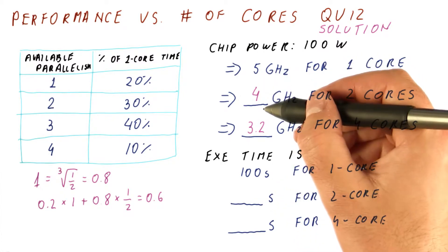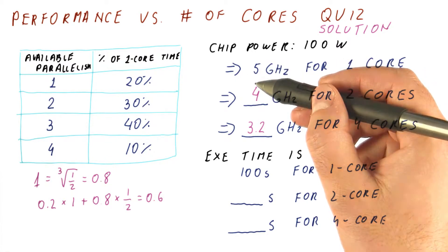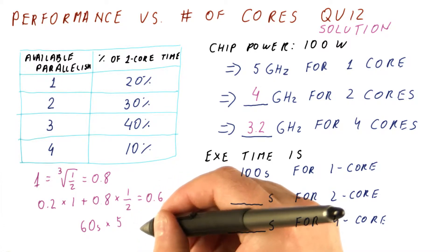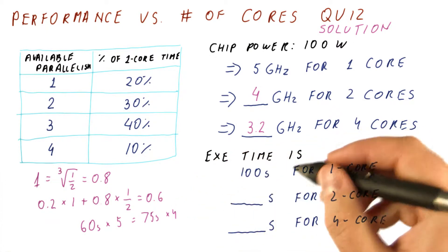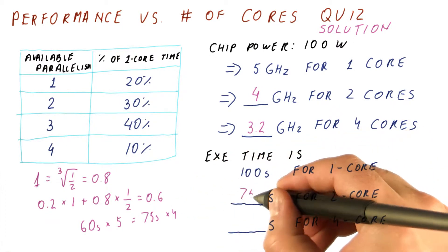Unfortunately, there is a change in frequency. 60 seconds at 5 gigahertz would translate. So we get 60 seconds times 5 billion cycles per second is 75 seconds at 4 billion cycles per second. So the answer here is 75 seconds.